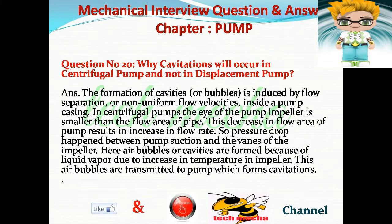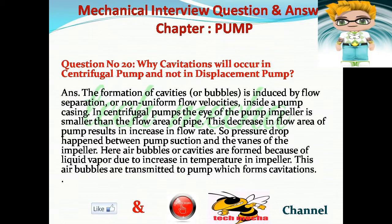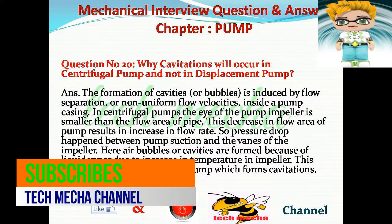Question number 20: Why does cavitation occur in a centrifugal pump and not in a displacement pump? Answer: The formation of cavities or bubbles is induced by flow separation or non-uniform flow velocities inside a pump casing. In centrifugal pumps, the eye of the pump impeller is smaller than the flow area of the pipe, causing a pressure drop between pump suction and the vanes of the impeller. Air bubbles or cavities form due to liquid vapor caused by the increase in temperature at the impeller, and these bubbles are transmitted to the pump, resulting in cavitation.